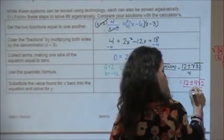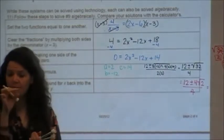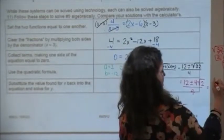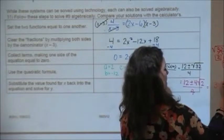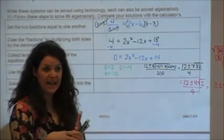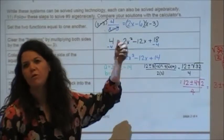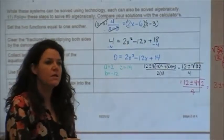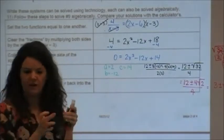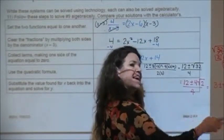So I'm going to rewrite this as 12 plus or minus 4 square root of 2 over 4. Now to simplify further, because all of my outside numbers are divisible by 4, I'm going to go ahead and do that and you get 3 plus or minus square root 2. When we did this with our calculator we got decimals. Those are decimal approximations. But this is my exact answer: 3 plus the square root of 2 and 3 minus the square root of 2.